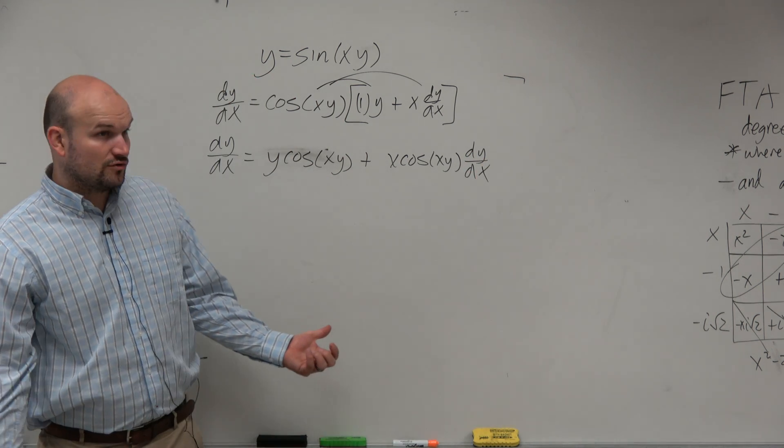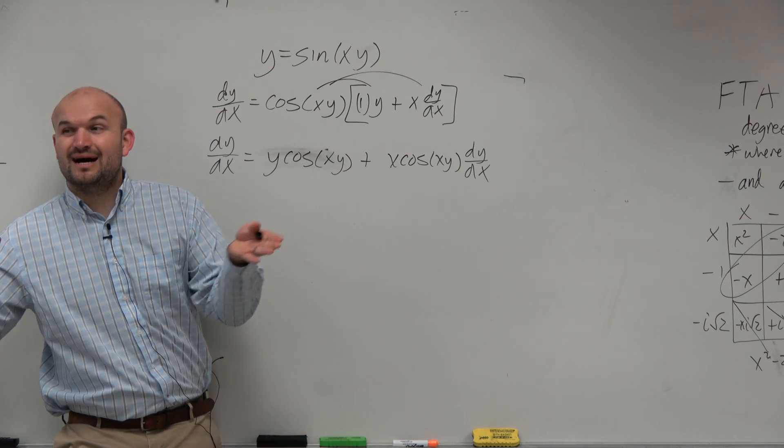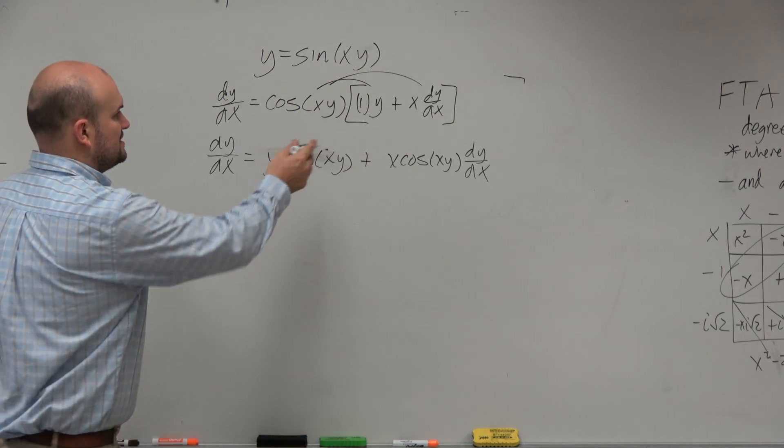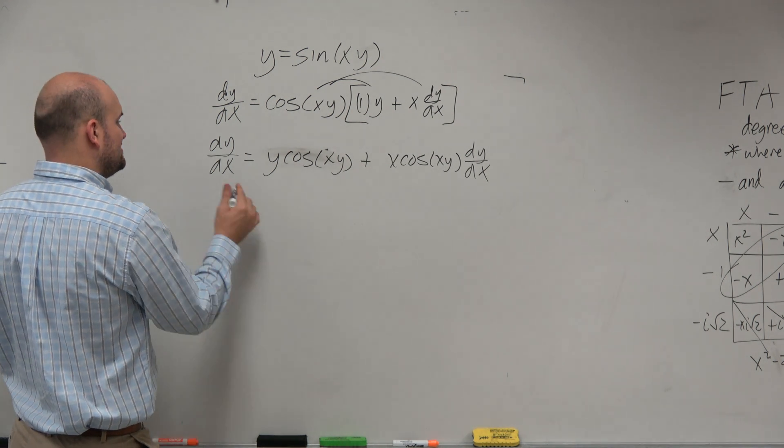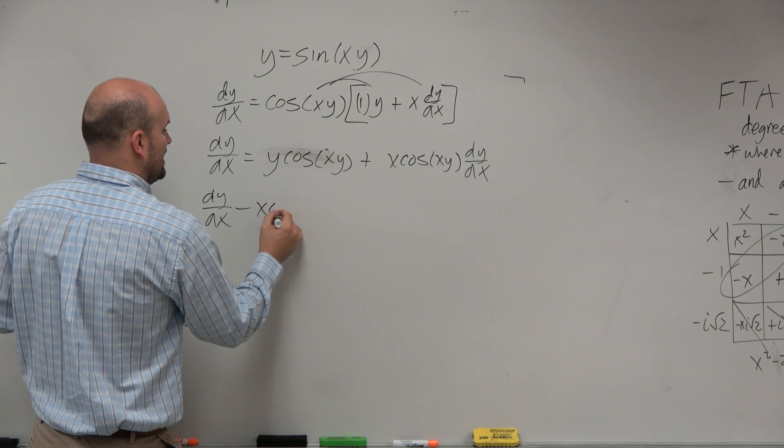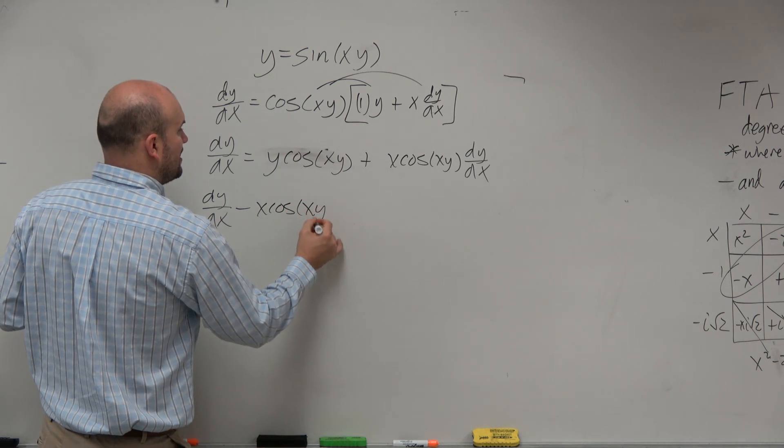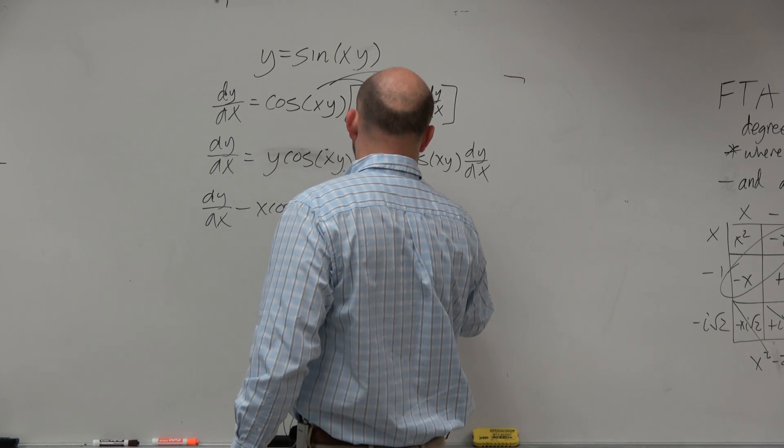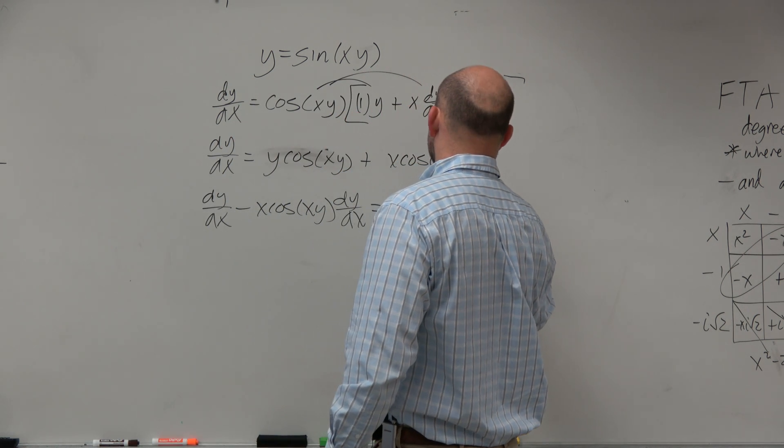And then again, what is our general rule? We want to group the dy/dx terms on the same side and factor it out. So I'm going to subtract that x cosine of xy dy/dx to the same side. So I have dy/dx minus x cosine of xy dy/dx equals y cosine of xy.